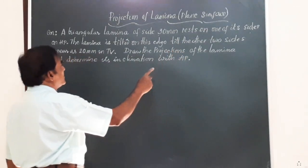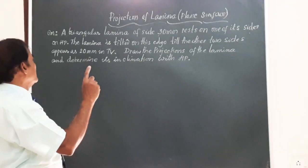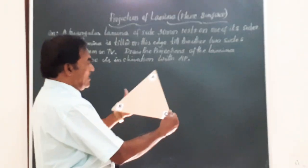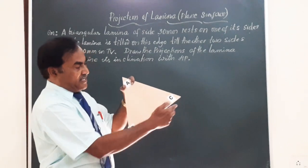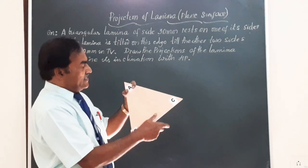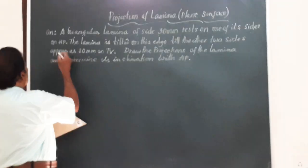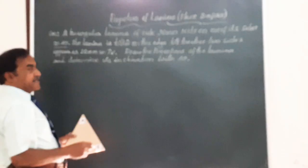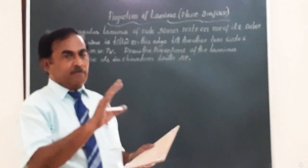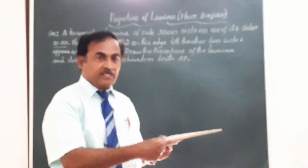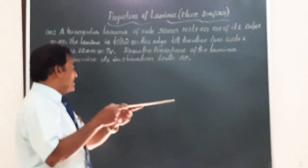A triangular lamina of side 30 mm rests on HP on one of its sides. We have a triangular lamina ABC having each side measuring 30 mm. And it says it is resting on HP. The moment you see that the lamina is resting on HP, place the lamina on HP such that one of the side is normal to VP, means perpendicular to VP.